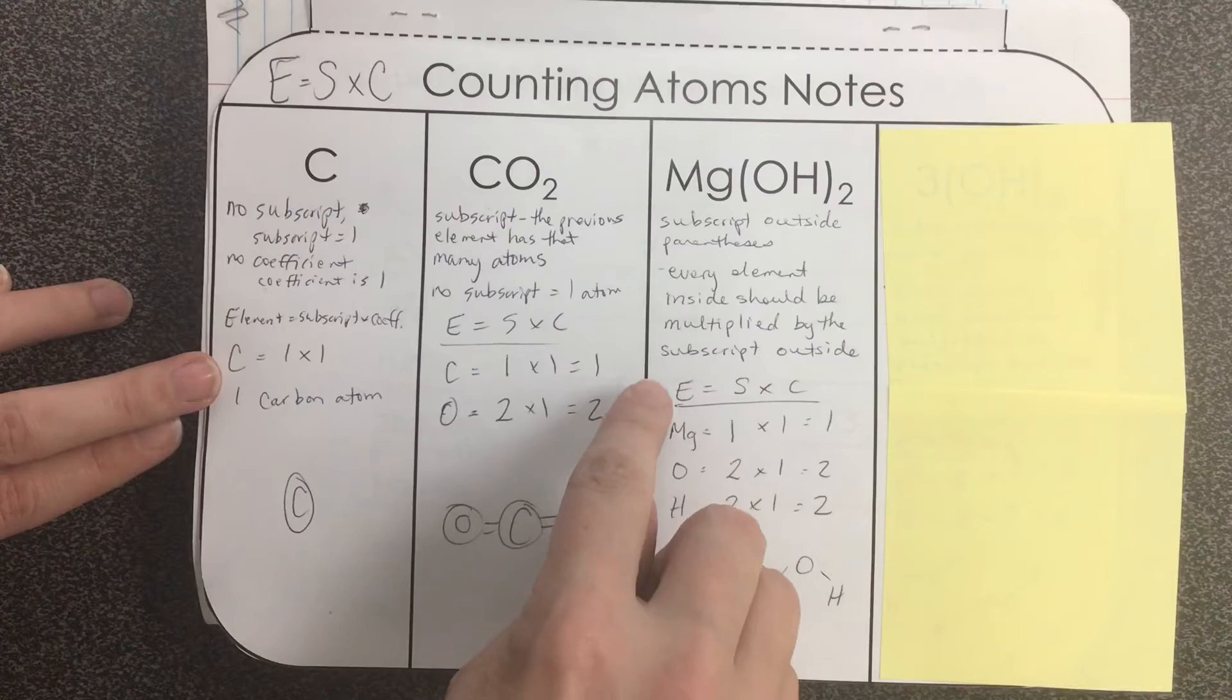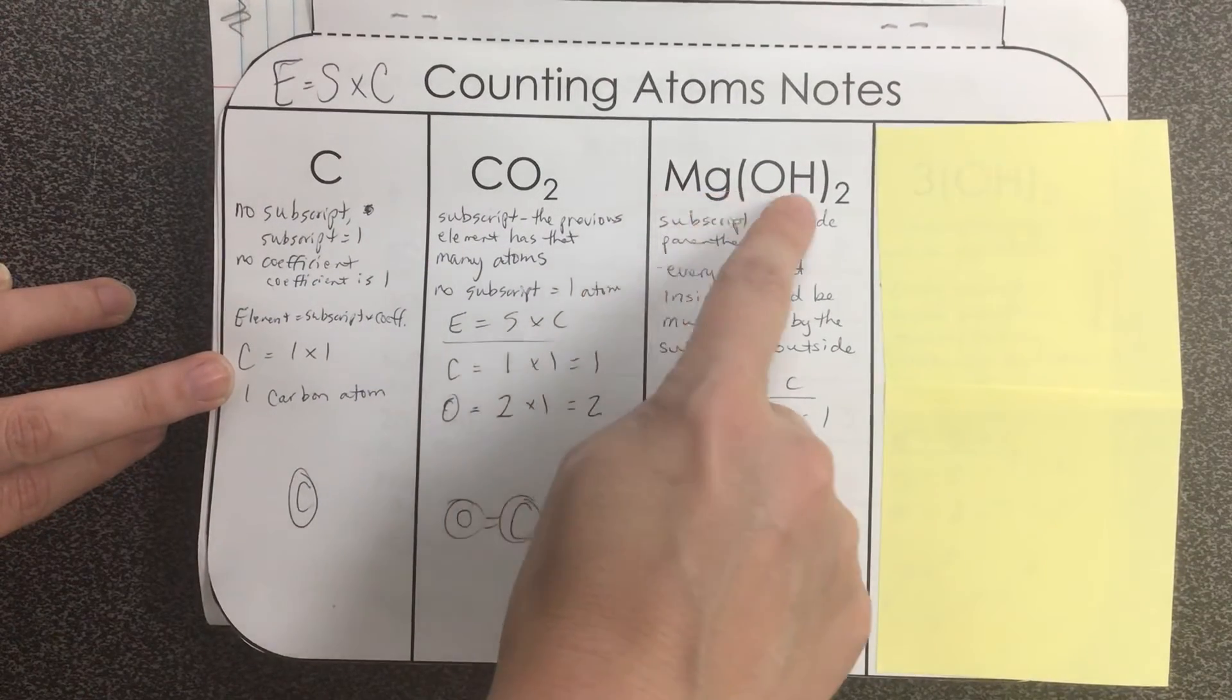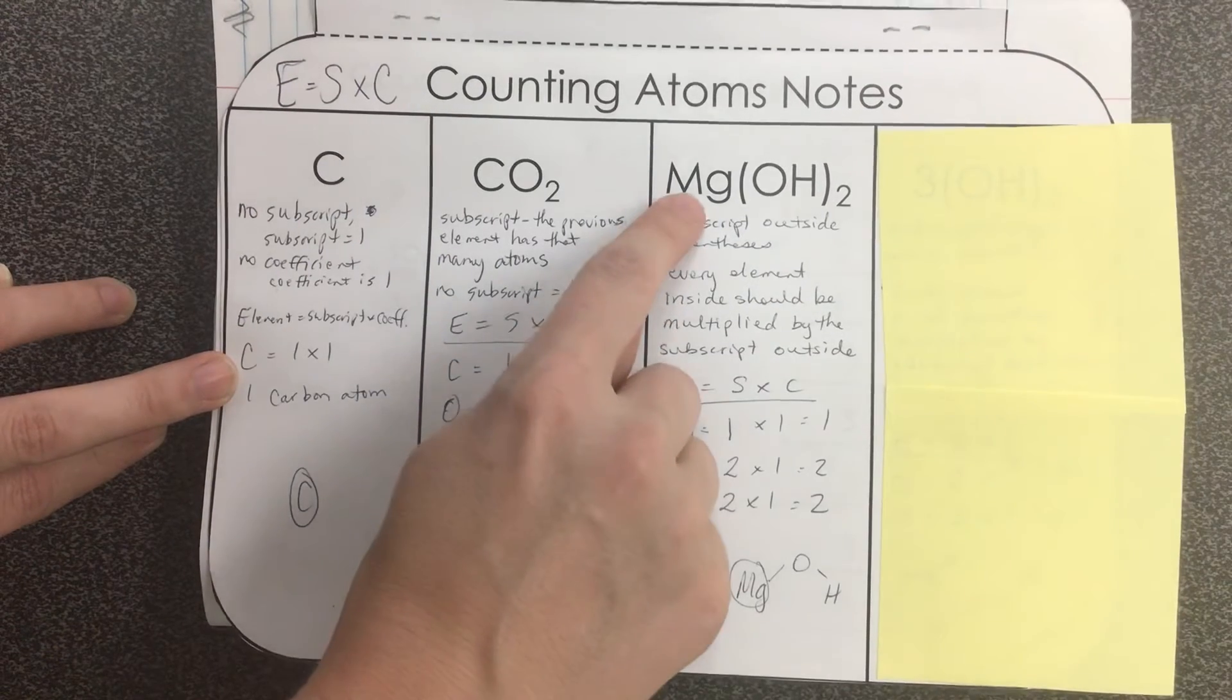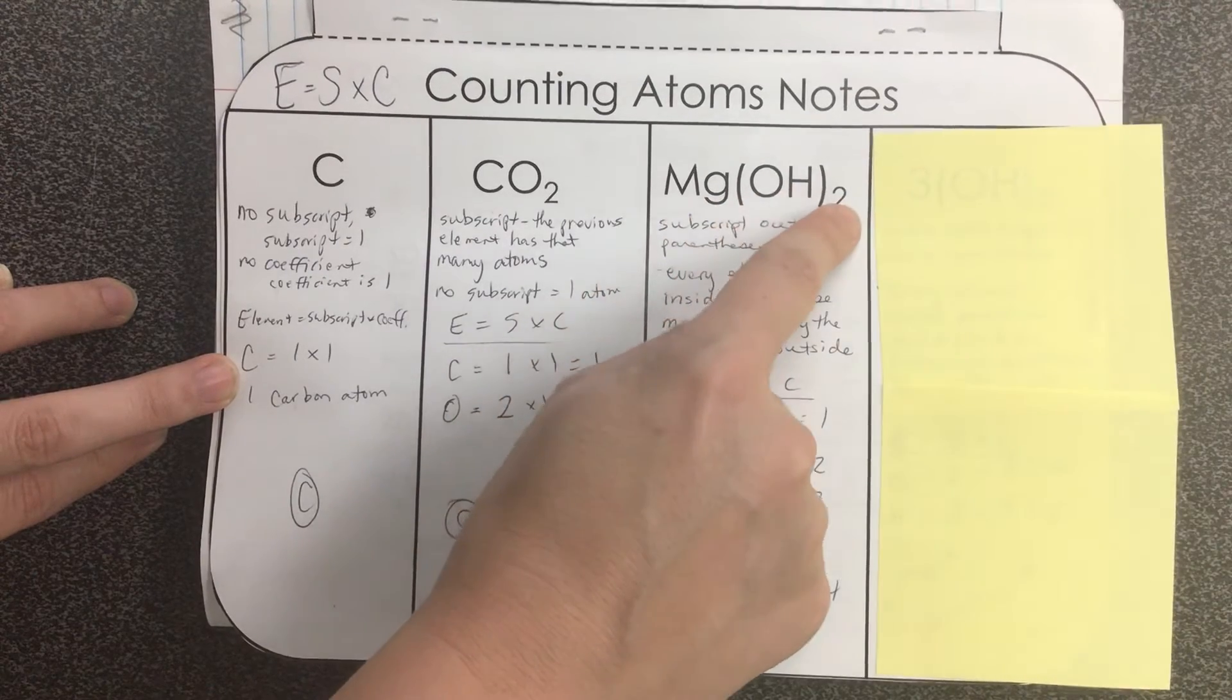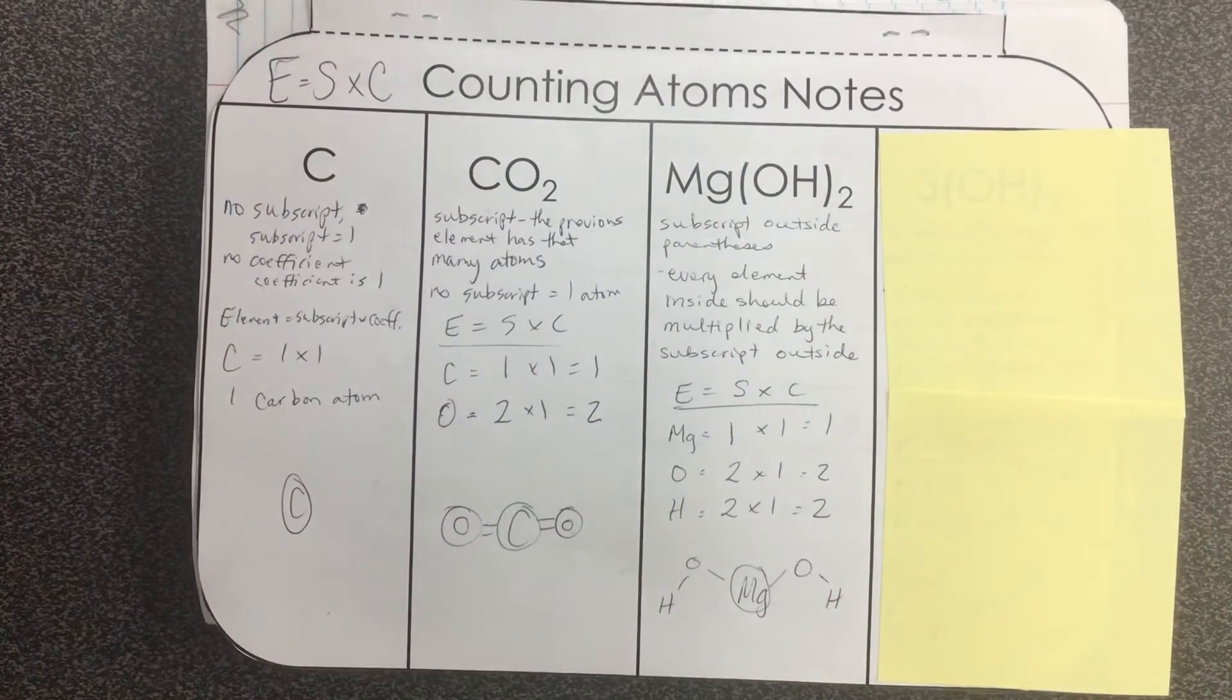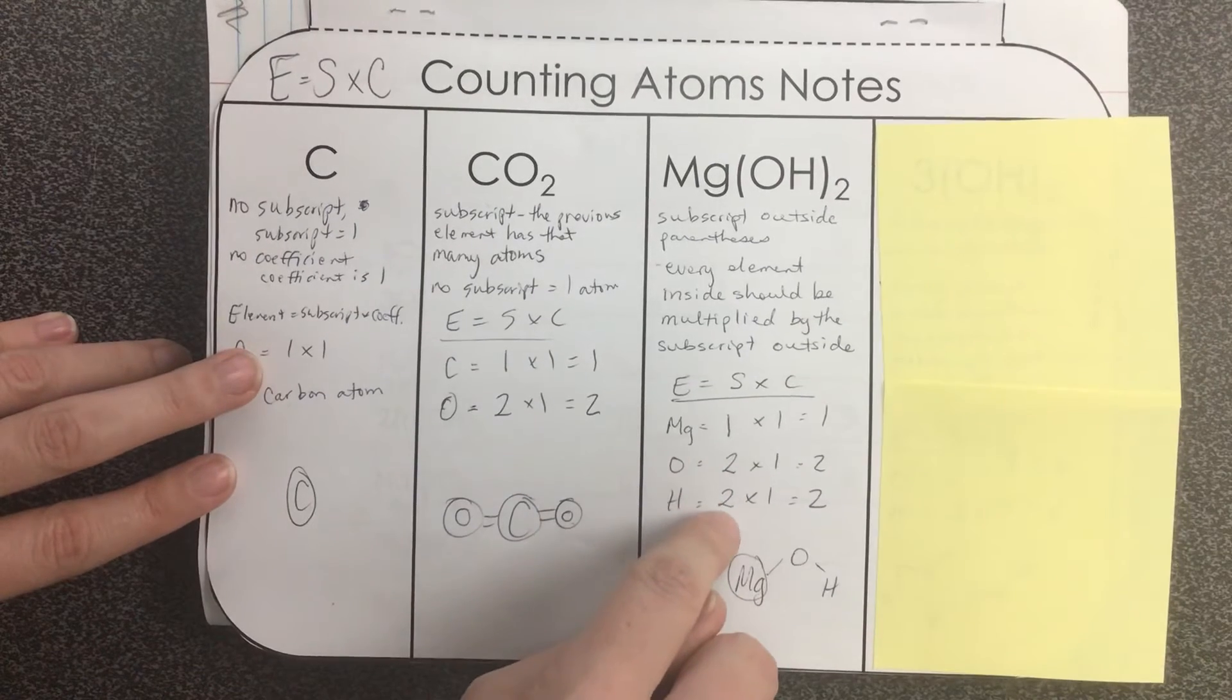So when we set it up we list our elements: magnesium, oxygen, and hydrogen right here. Our subscript for magnesium, because it is present, it is one. Oxygen and hydrogen, this subscript applies to both. You distribute it almost like the distributive property in math. So their subscript is two.